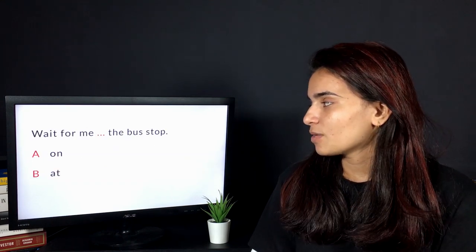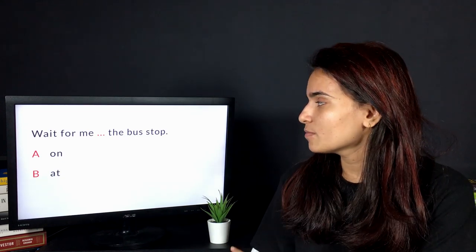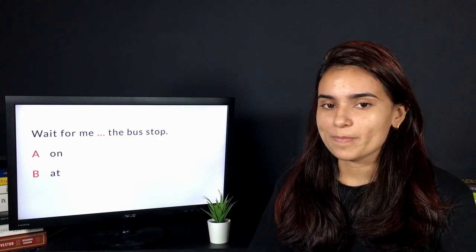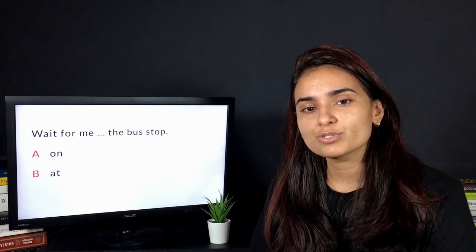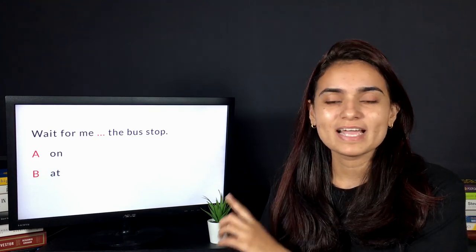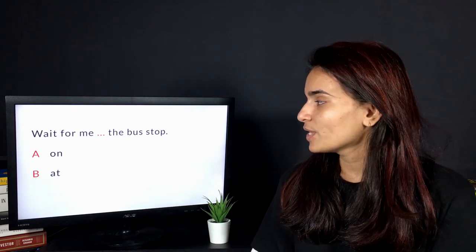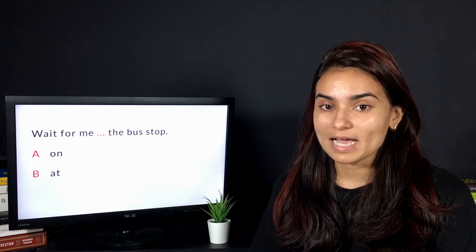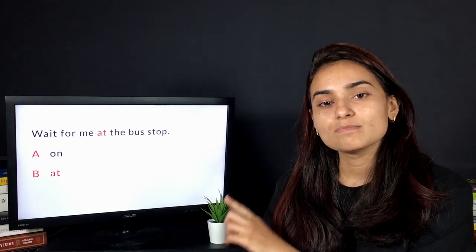Coming up is question number four: Wait for me dash the bus stop. This is a particular area in English grammar where most people are wrong. If you are a basic learner or a fluent speaker, I am 100% sure that we make mistakes in this. We have two options: on and at. The correct answer is 'wait for me at the bus stop.'